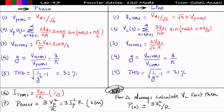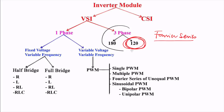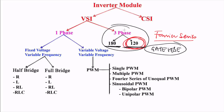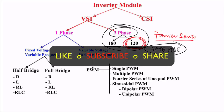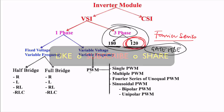We have now completed the three-phase voltage source inverter in both 180-degree and 120-degree conduction modes. In the coming lecture we will solve previous year GATE and ESE problems from three-phase voltage source inverter. If you understood the concept, please like this video, and if you have any doubts, ask in the comments below or join our Facebook group for doubt solving.